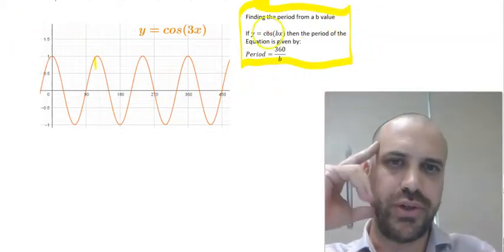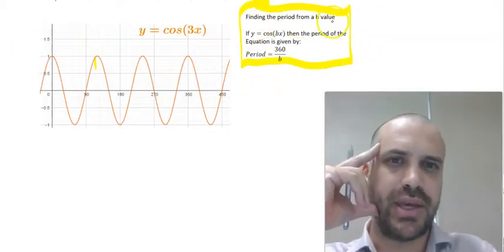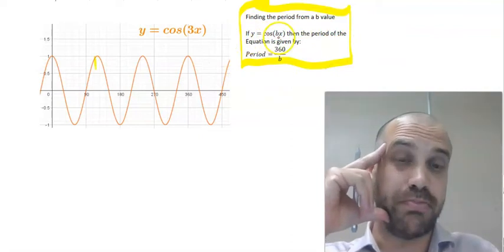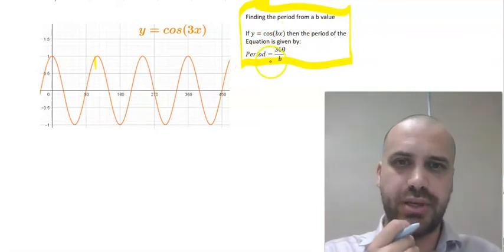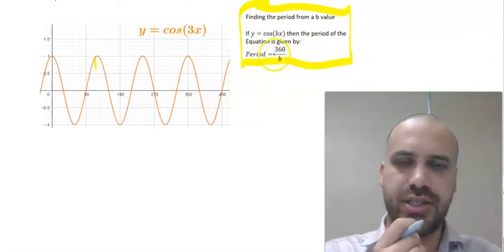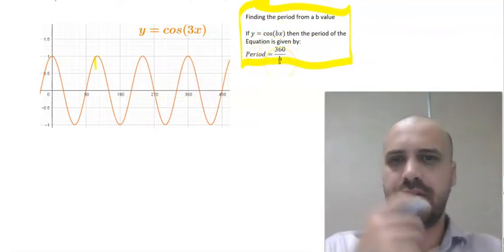Let's write that down. Here's the important notes for you. Finding the period from a B value. If y equals cos(Bx), where B is a number, then the period of the equation is given by period equals 360 divided by B.